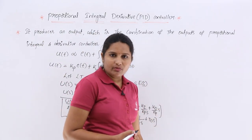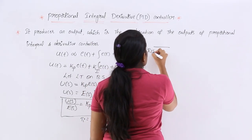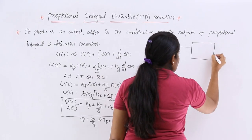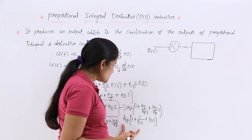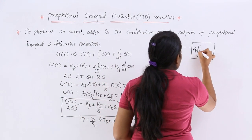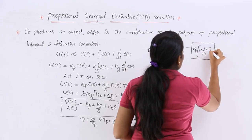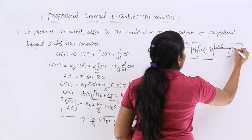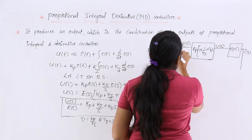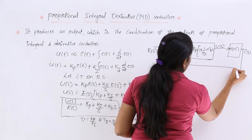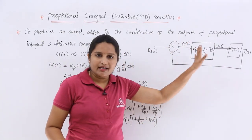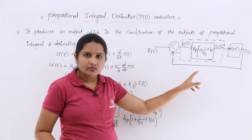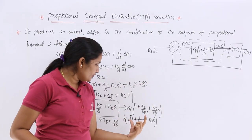Now with this transfer function, we draw the block diagram. The block diagram of the control system contains the input transform first, followed by the PID controller block represented by its transfer function Kp·[1 + 1/(Ti·s) + Td·s]. The input is E(s), output is U(s), followed by a gain block, output C(s), and negative feedback. This is the control system with PID controller.